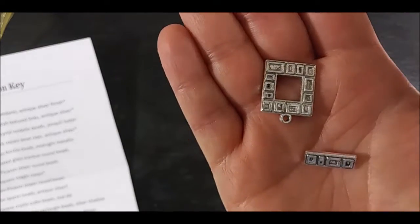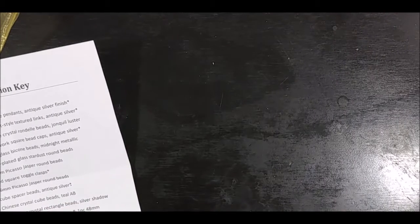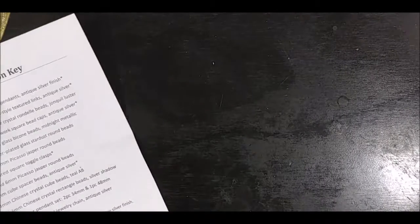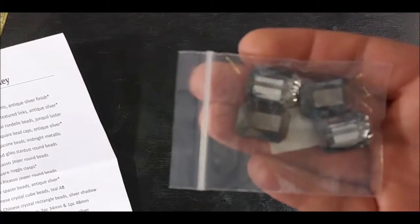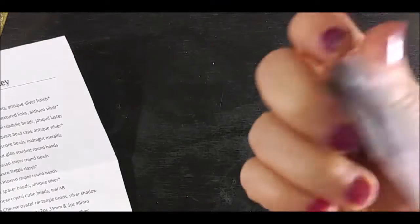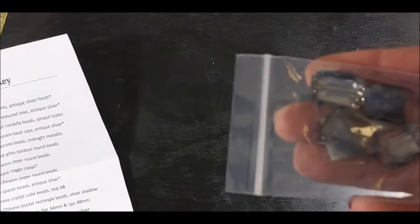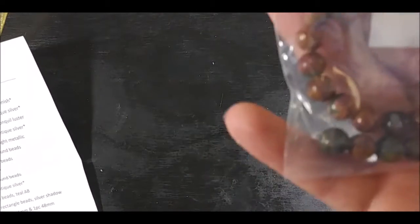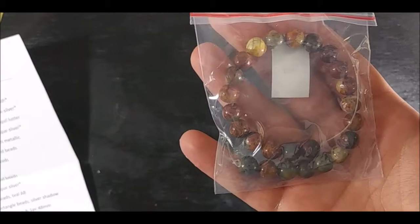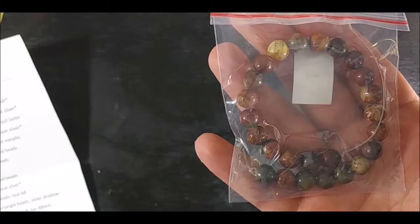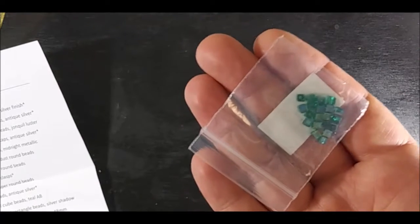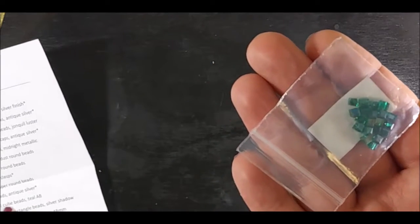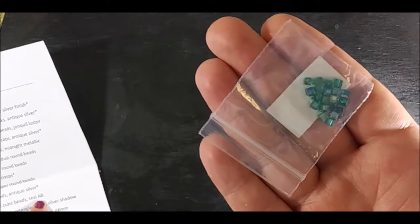Okay, this is bag 12. Sorry, four piece, 18 by 13 millimeter Chinese crystal rectangle beads silver shadow, which is pretty. A 7.5 inch strand, 8 millimeter Picasso jasper round beads. Those were pretty too. This is a 20 piece, 4 millimeter Chinese crystal cube beads teal AB. Those are pretty.